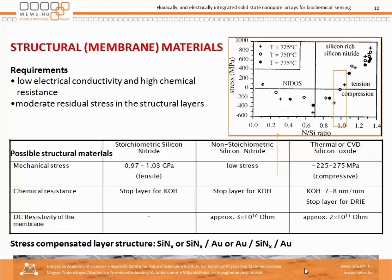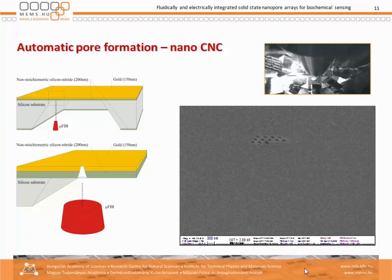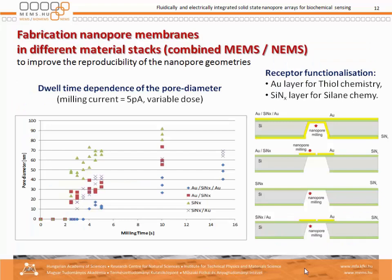Well-known tension and compression combinations have to be applied to achieve a low-stress membrane, which can support drilling by the focused ion beam. We have to use gold in order to get the chemistry we are interested in. These are the drilled holes, and you can see that multiplicity can be automatically prepared in the membranes within a few minutes.